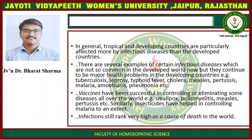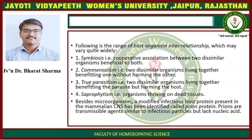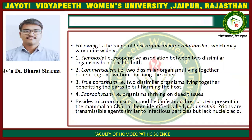Infections still rank very high as a cause of death in the world. Following is the range of host-organism interrelationship, which may vary quite widely. First is symbiosis — a cooperative association between two dissimilar organisms, beneficial to both. Second, commensalism — two dissimilar organisms living together, benefiting one without harming the other. Third, true parasitism — two dissimilar organisms living together, benefiting the parasite but harming the host. Fourth, saprophytism — an organism thriving on dead tissue.